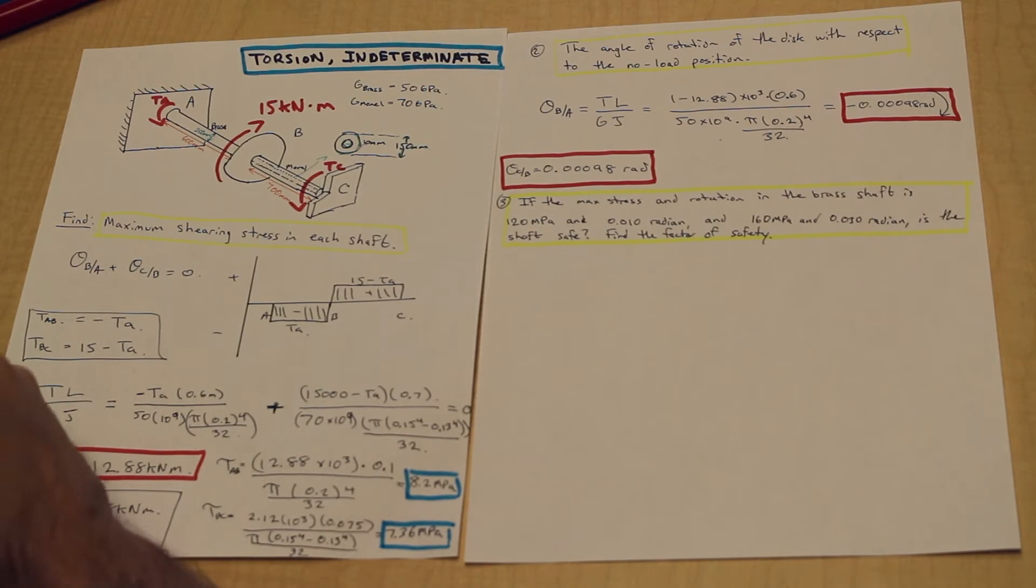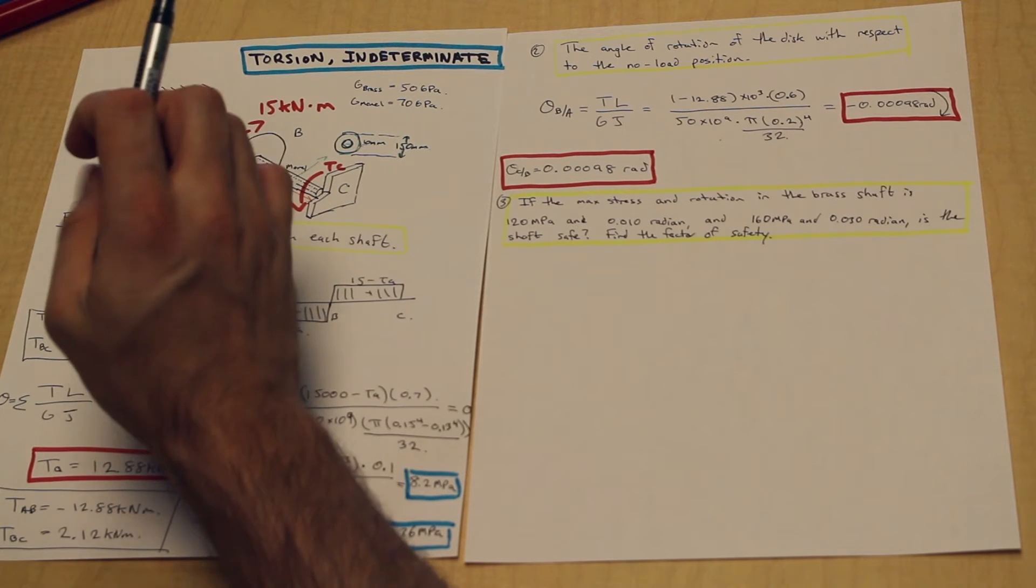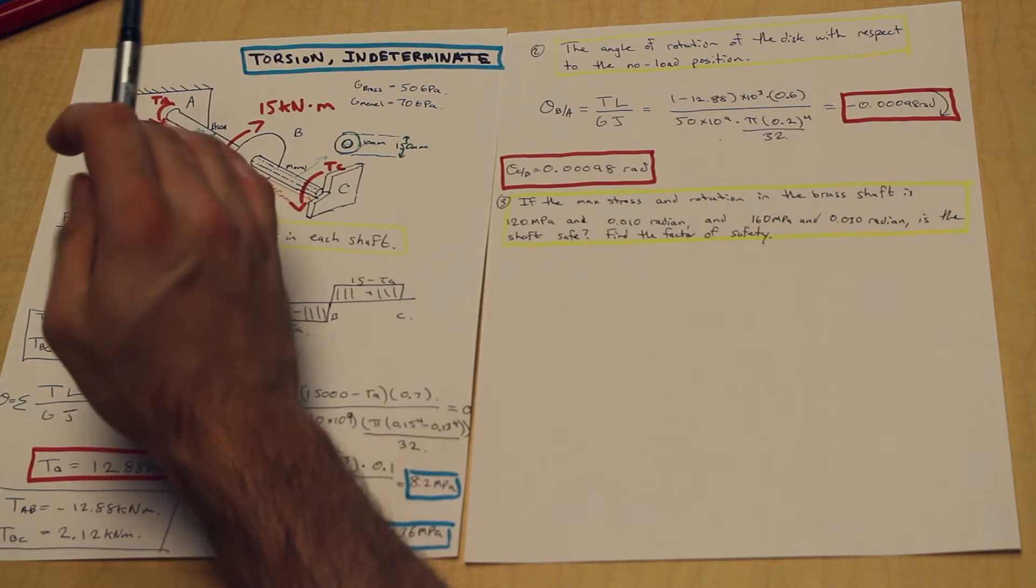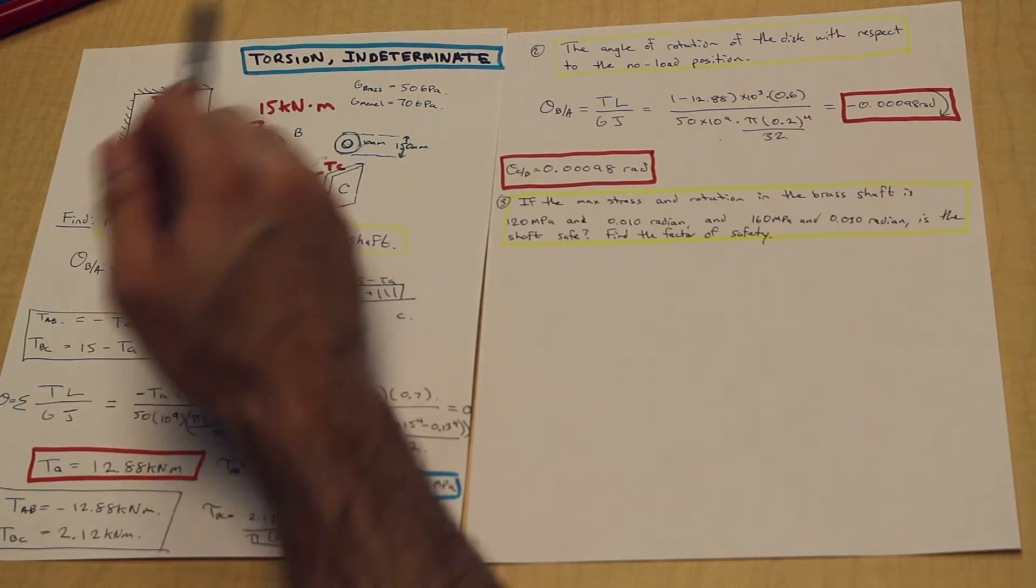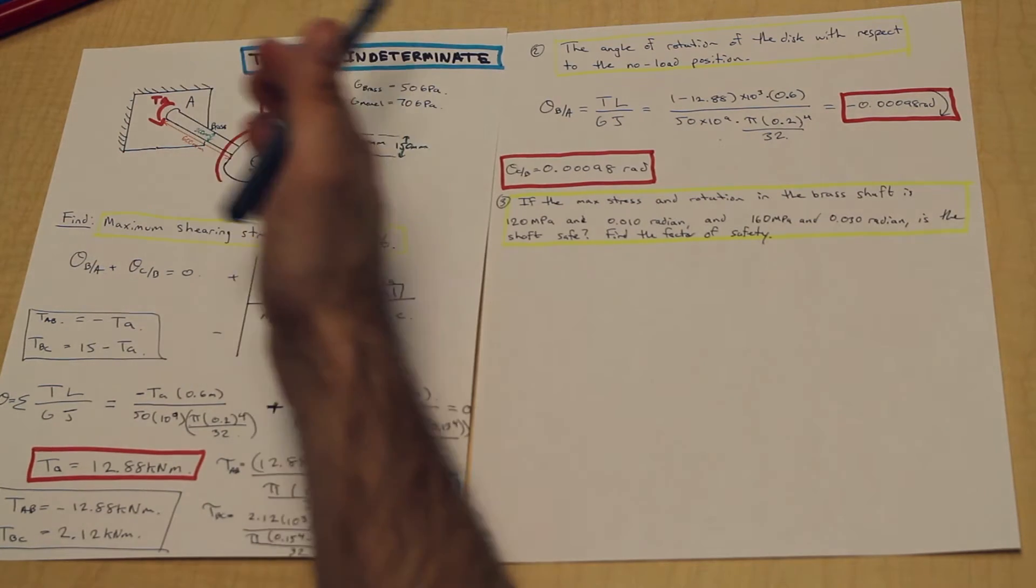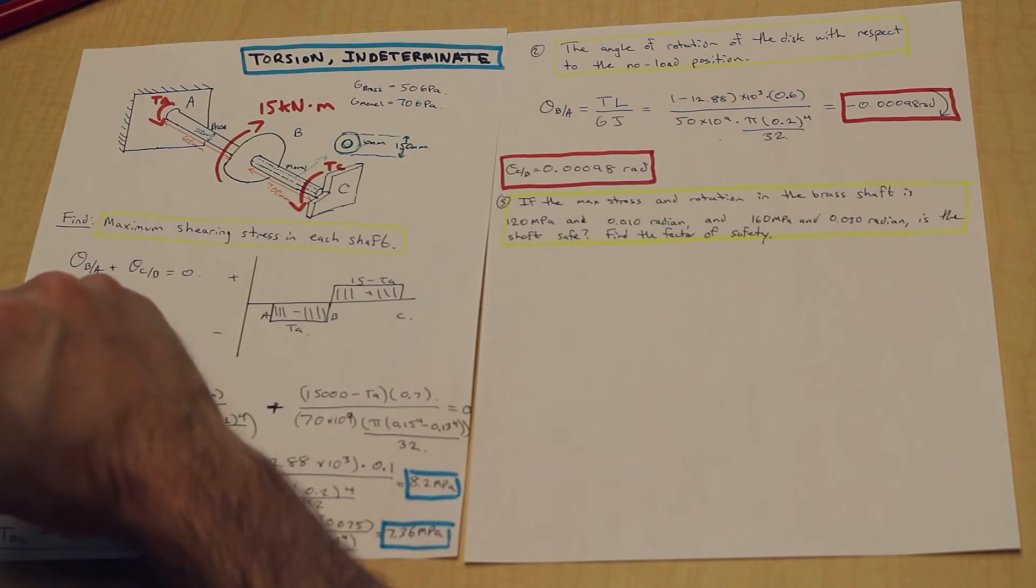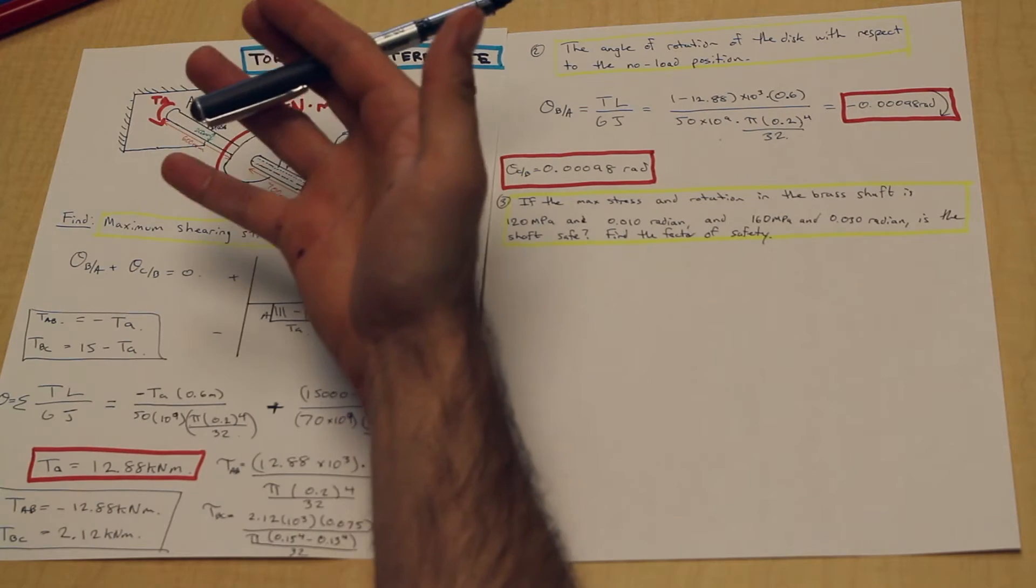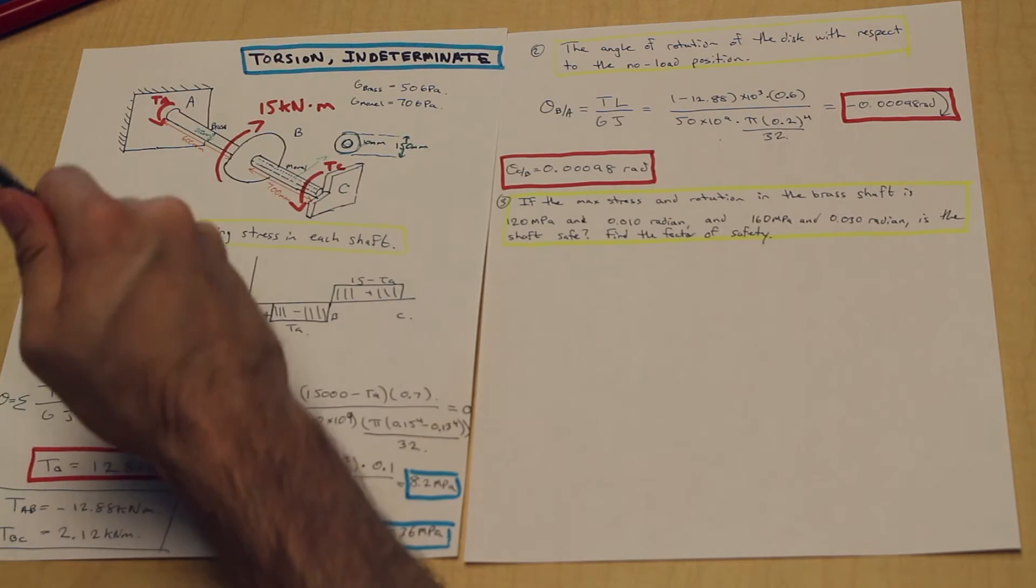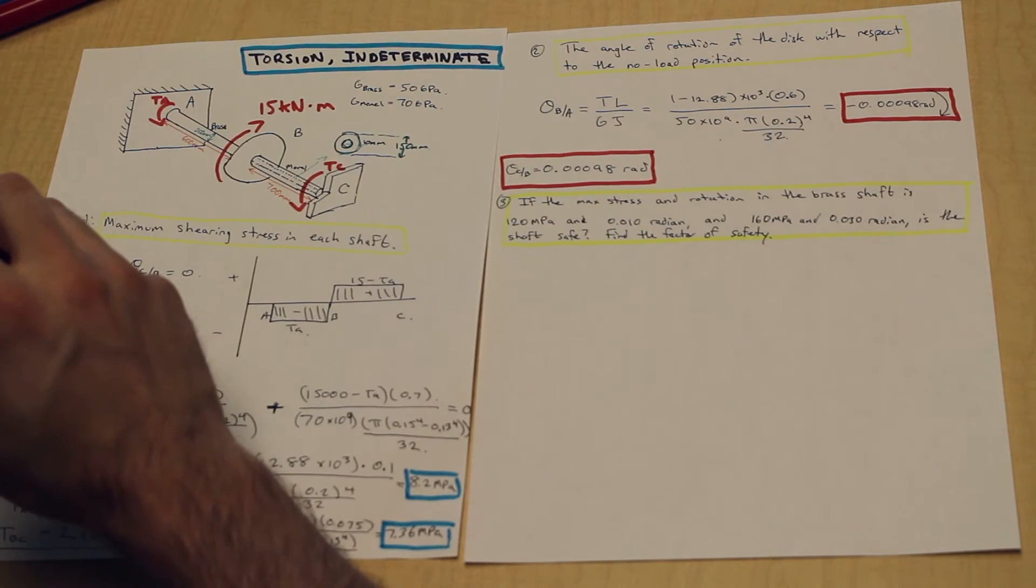Hi guys, Fred here, back again. AF Math and Engineering. This is the fourth part of our series on torsion and indeterminate problems. This is the last part of the question, utilizing all the answers we've got so far and checking whether the stresses that the shaft is under right now are safe or not. That's a big part of civil engineering - we check whether structures and things under stresses, loads, and strains are safe. Let's begin.